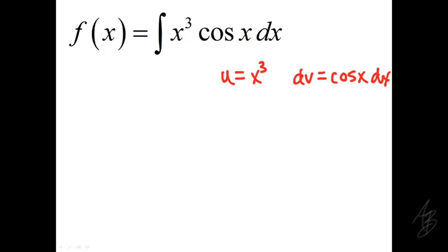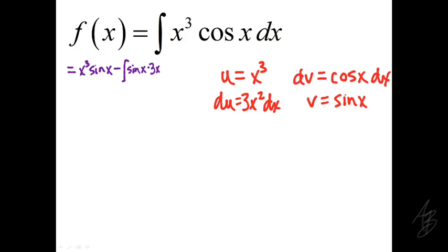If we let u equal x cubed, that leaves dv equal to cosine of x dx. So du is 3x squared dx and v is sine of x. Using the integration by parts formula, this integral is going to be x cubed times sine of x minus the integral of sine of x times 3x squared. Then we repeat the process for that remaining integral.